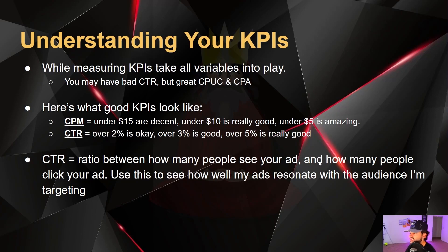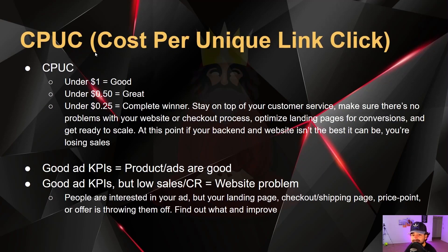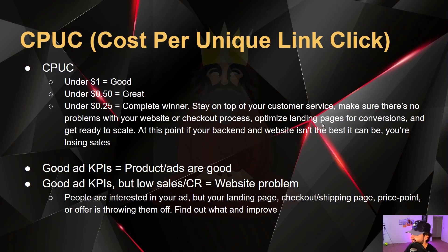CTR is the ratio of how many people see your ad versus how many people click it. I use it to tell how well my ads are resonating with the audience I'm targeting. For CPUC — cost per unique link click — under $1 is good, under 50 cents is great, and under 25 cents is a complete winner. At that point, adjust the landing page, improve copy and creatives, and get ready to scale, because your CPA is going to be great.